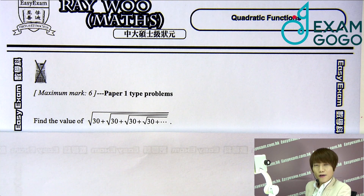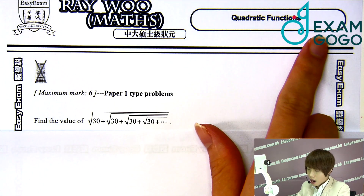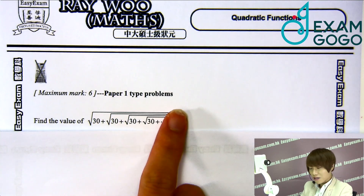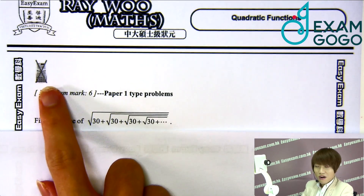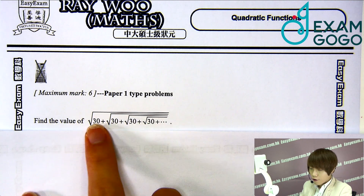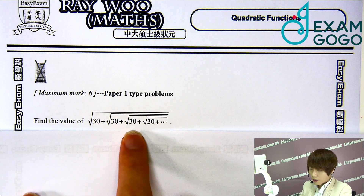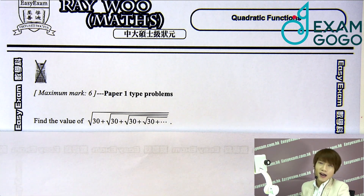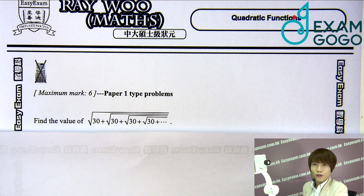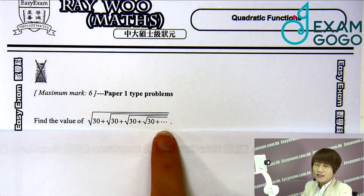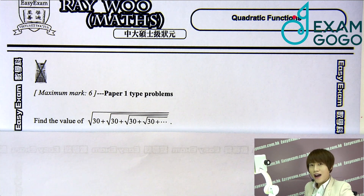Let's take a look at this quadratic function problem with marks 6, which belongs to Paper 1. As you can see, this is a non-GDC problem. Find the value of √(30 + √(30 + √(30 + √(30 + ...)))), carrying on infinitely. You guys think this is mission impossible to calculate because you are just adding infinitely till the end of the world, right?